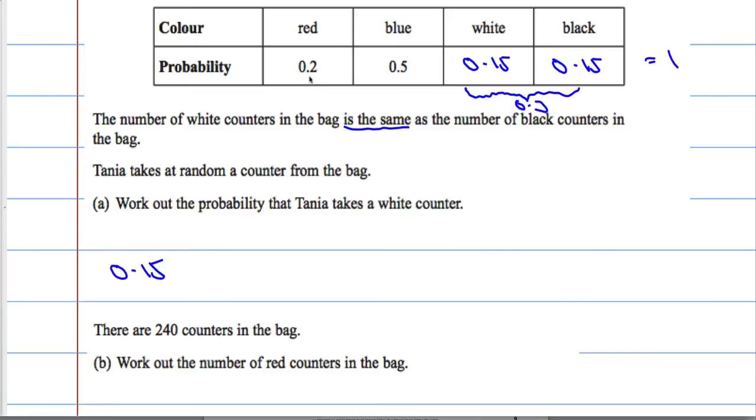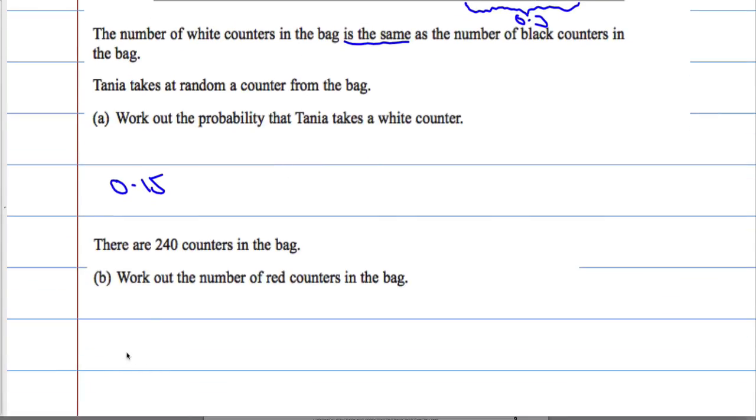Well, if the probability of getting a red counter is 0.2, that means 20% of them must be red. So I need to work out what is 20% of 240, or you could just do 240 multiplied by 0.2.